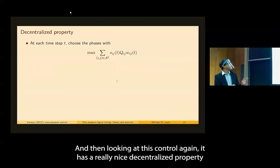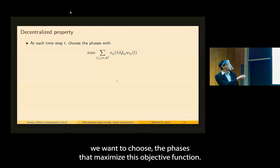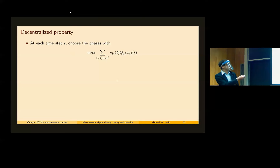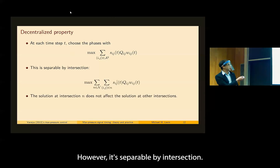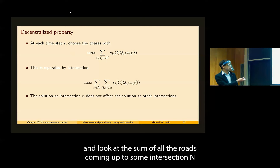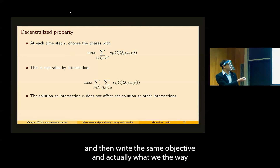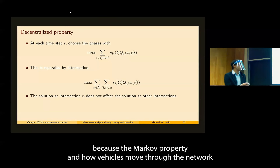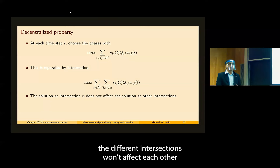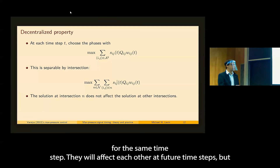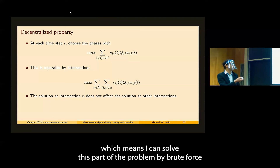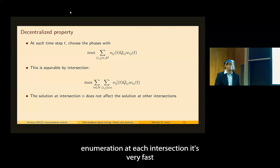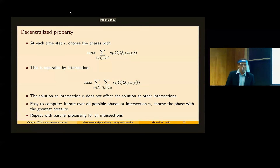The max pressure control has a nice decentralized property. At each time step, we choose phases that maximize the objective function — a sum over all links for signal timing across the entire city. However, it's separable by intersection: I can take the sum over intersections N and look at the sum of roads coming into intersection N. Because of the Markov property, different intersections don't affect each other for the same time step — they only affect each other at future time steps. So I can solve each intersection's problem by brute force enumeration, looping through all phases (about eight), making it very fast. Parallel processing is possible.